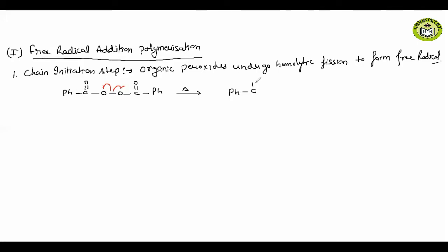From the homolytic cleavage, we get Ph-C(=O)-O radical. This can undergo further cleavage: the C-O bond breaks, giving Ph radical plus CO2. So two molecules of carbon dioxide are released along with two Ph radicals.